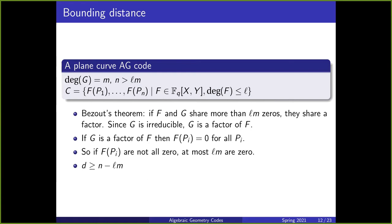The first thing we have to do is bound the distance of this code. Suppose that f and g share more than lm zeros. Then by Bezout's theorem, since the degree of f is l and the degree of g is m, that means f and g share a factor. But if f and g share a factor and g is irreducible, that means g is a factor of f. Since g of p1 through pn are all zero, if g is a factor of f, then f of p1 through pn are also all zero. So if f of pi aren't all zero, then at most lm of the n are zero, and thus the distance is at least n minus lm.